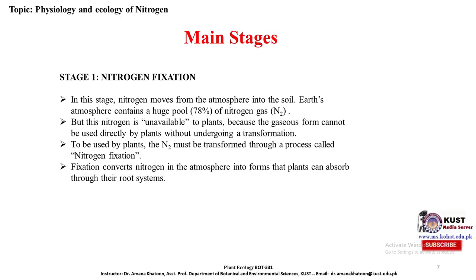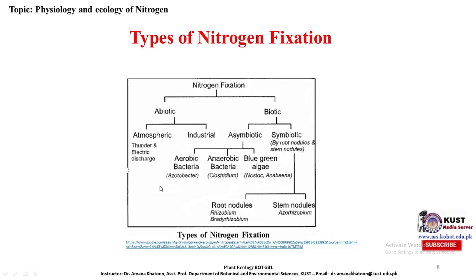The main stages of the nitrogen cycle. The first stage is nitrogen fixation, in which nitrogen moves from the atmosphere into the soil. Earth's atmosphere contains a huge pool — 78% — of molecular nitrogen gas. This nitrogen is unavailable to plants because the gaseous form cannot be used directly without undergoing a transformation called nitrogen fixation.